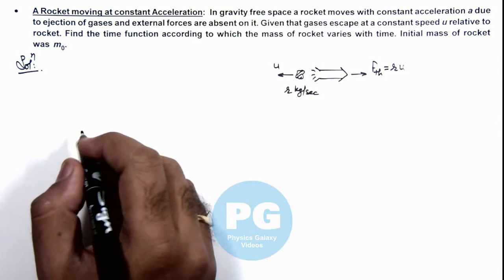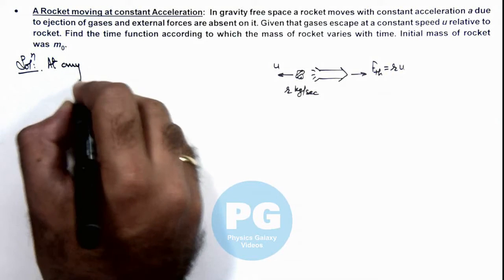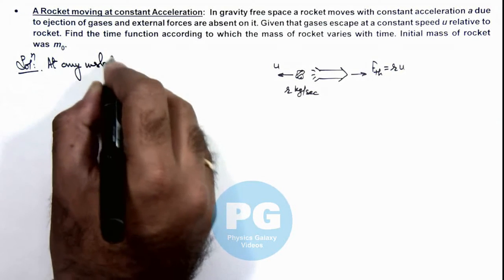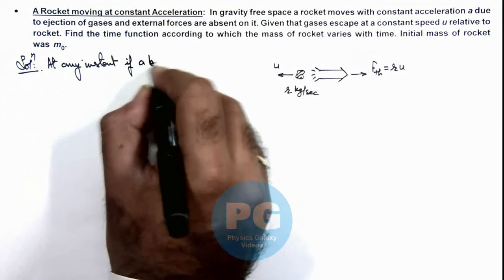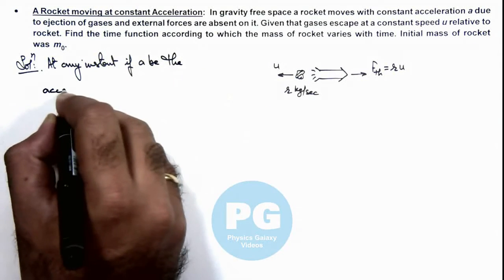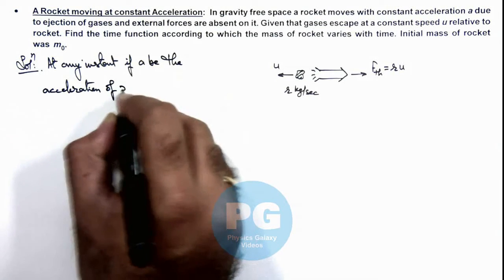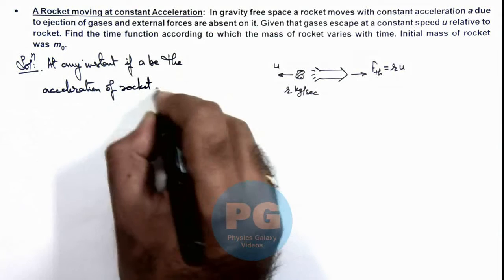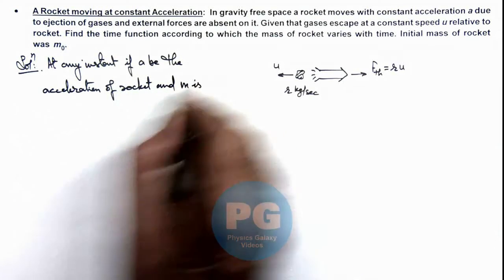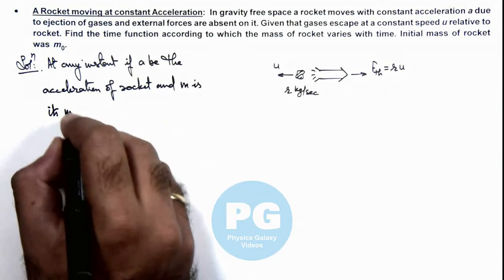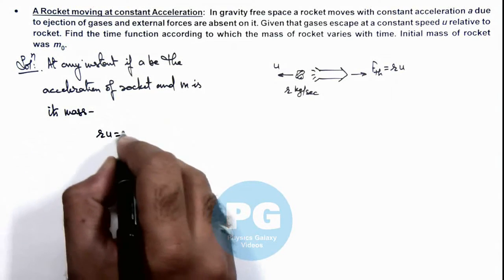At any instant, if aᵧ is the acceleration of rocket and m is its mass, then we can write r×u equals m×aᵧ.